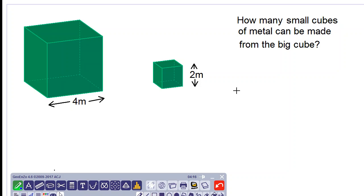Good day all. We are doing a question concerning solids and we are asked how many small cubes of metal can be made from the big cube of metal.